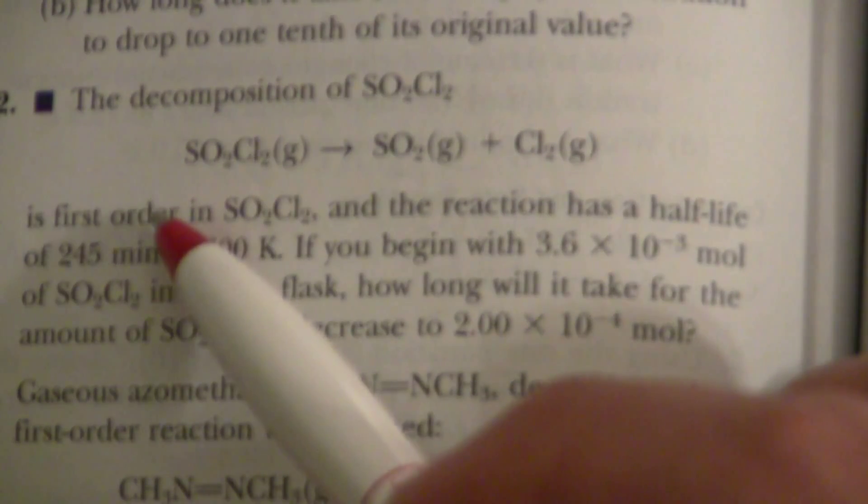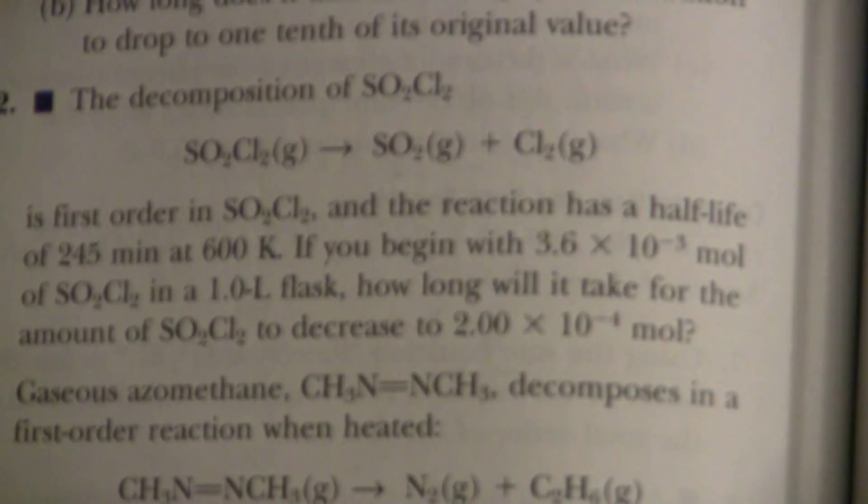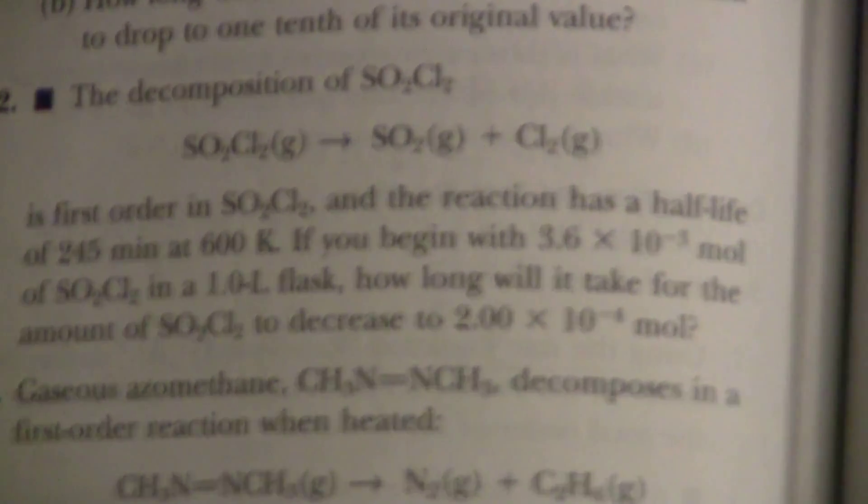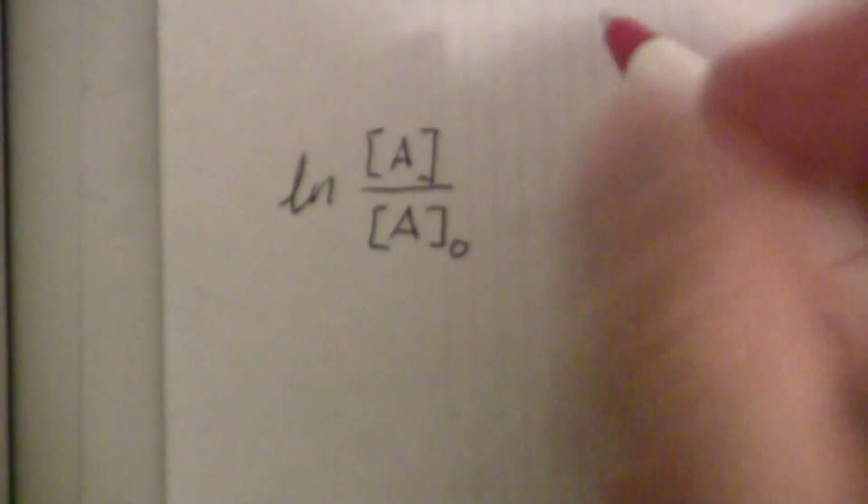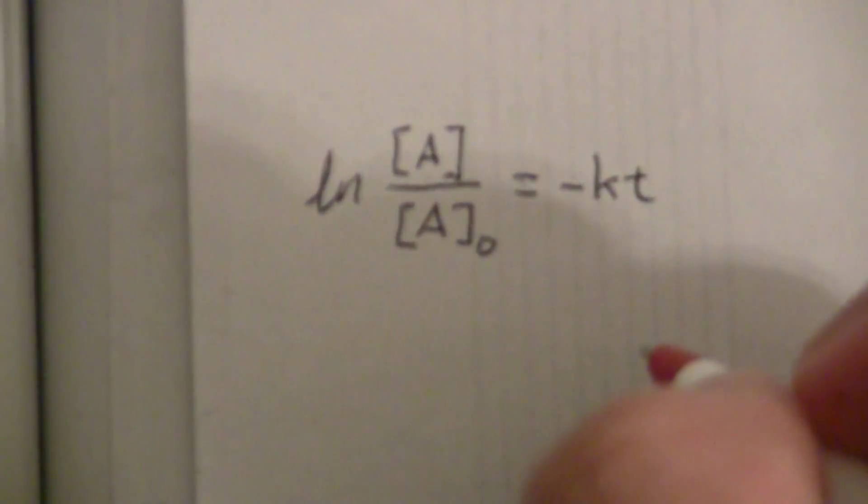Since this is a first order reaction, the integrated rate law is the natural log of, where A represents the SO2Cl2, A over A naught, equals minus KT.